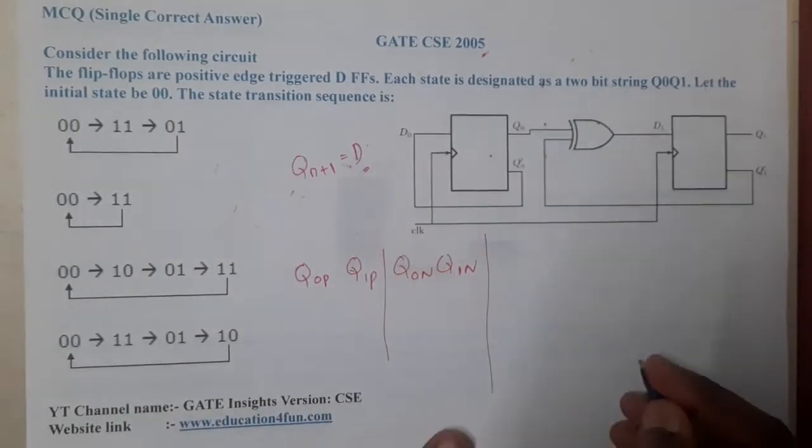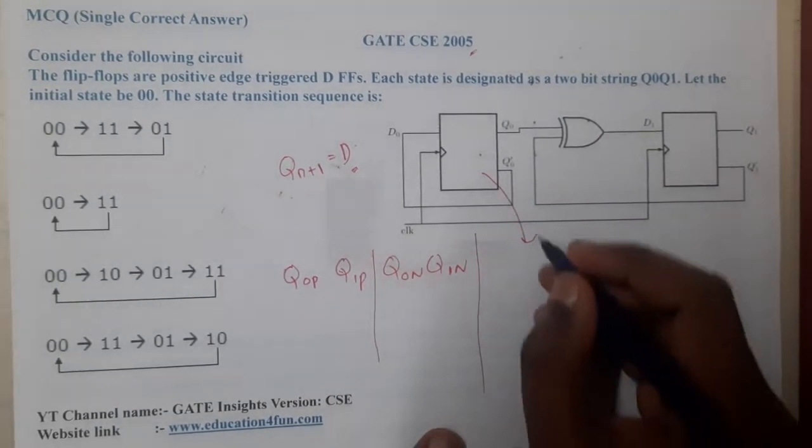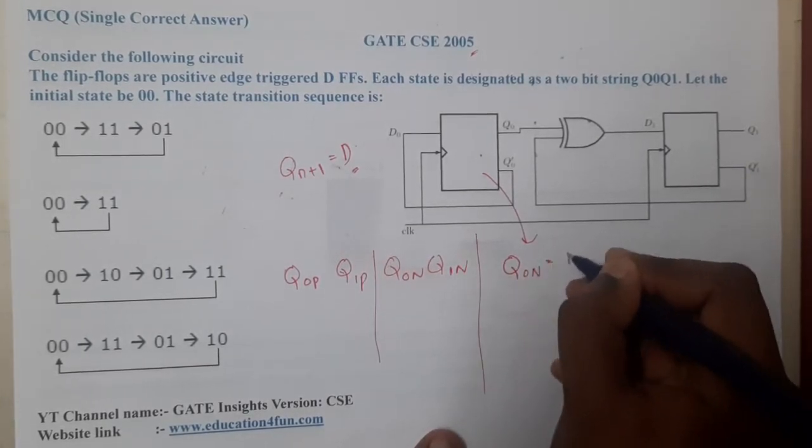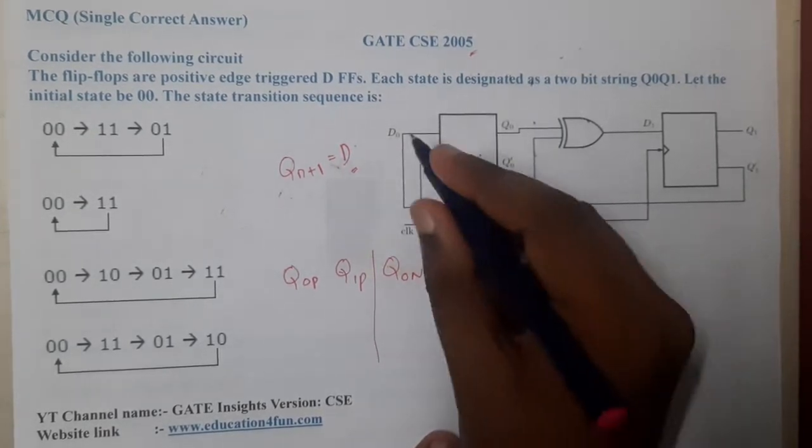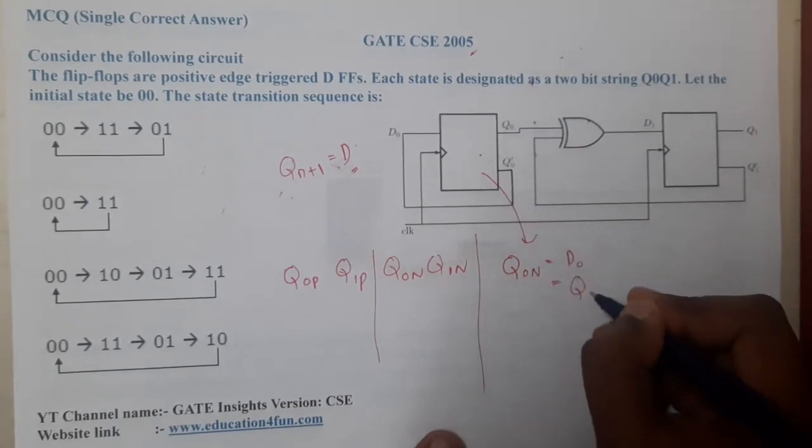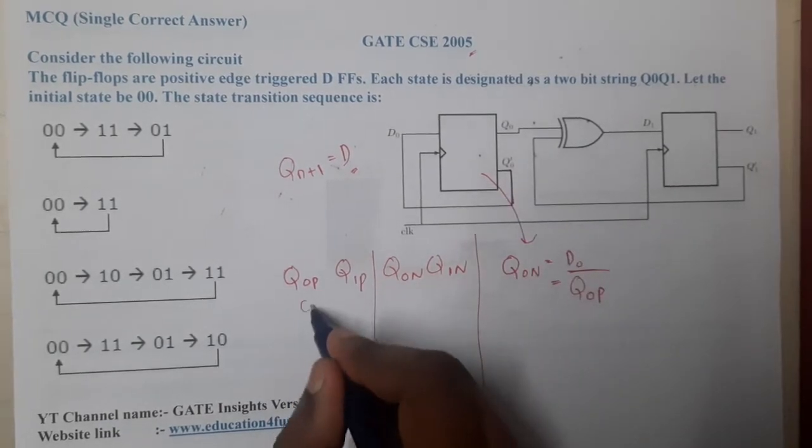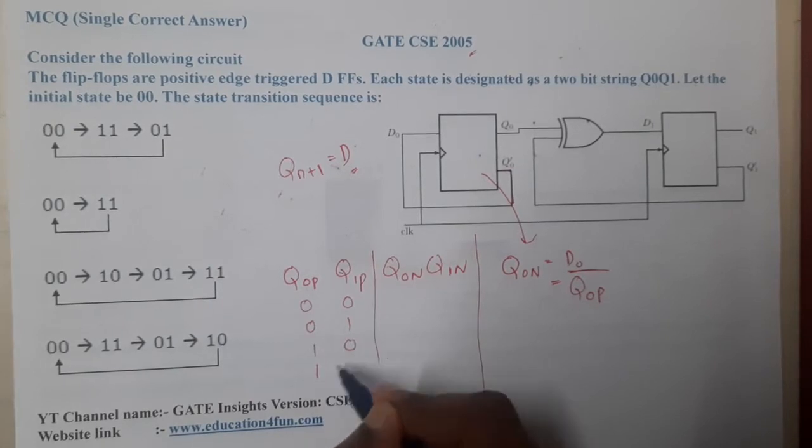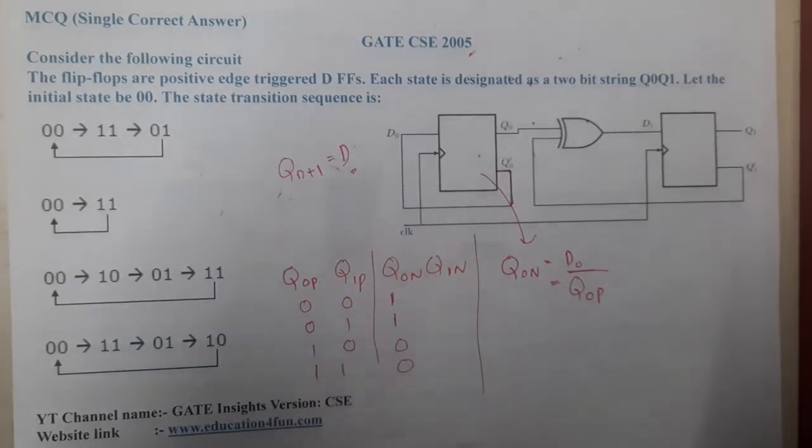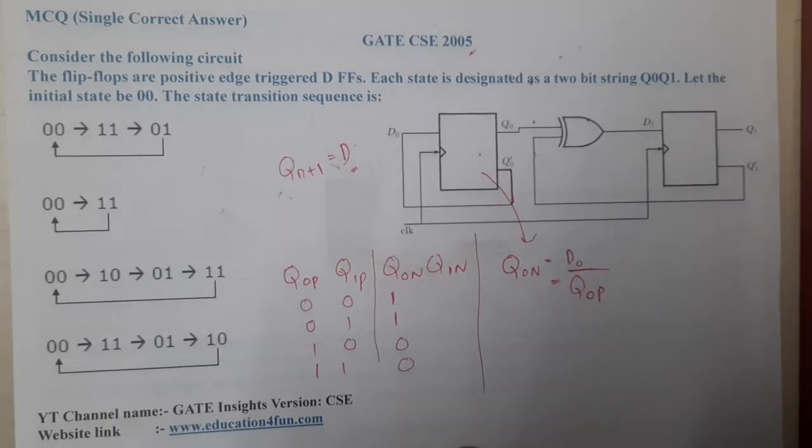Let us write the equation for this. The equation seems to be a bit really clumsy from the diagram, but anyway, let us concentrate and solve this. Q0 next equals D, so D0 is nothing but our input, which is the complement of the same previous one. So that is Q0 present complement. Let us fill it: 0 becomes 1, 1 becomes 0, 1 becomes 0, 1 becomes 0. So we get 1, 1, 0, 0.